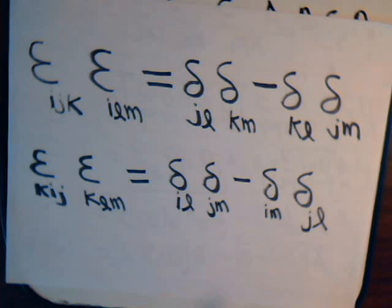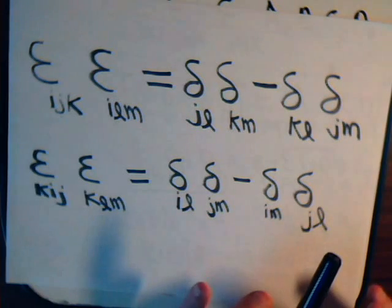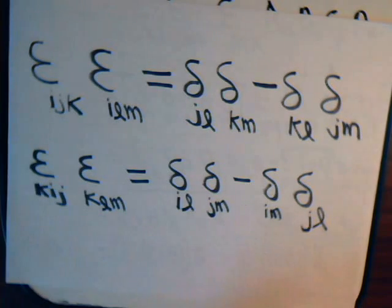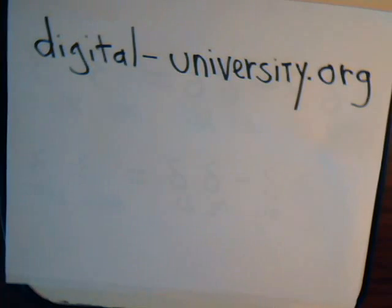And it's this kind of abstract approach that can make complicated vector identities very simple. And, of course, it's very useful to be able to think of this sort of abstract terms when you have to work with tensors. Anyway, the playlist for all the videos is at the website digital-university.org.